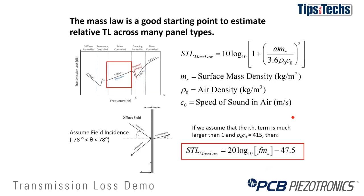The mass law is a good starting point to estimate relative transmission loss between many panel types. This simplification assumes an even distribution of incident sound energy on a panel over an angular range of minus 78 degrees to plus 78 degrees — known as field incidence. It also assumes that the panel is being excited in its mass-controlled frequency region, shown by the red box here. After simplifying for standard atmospheric conditions, all you need to know is the surface mass density and the frequency of the incident sound.